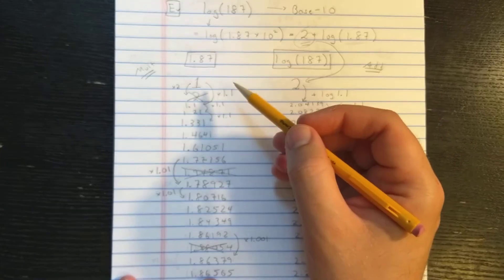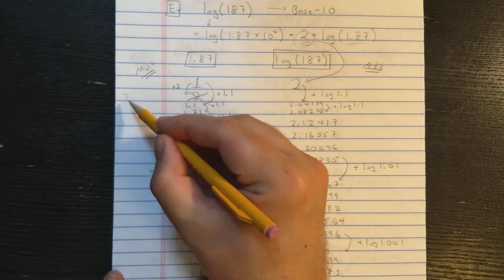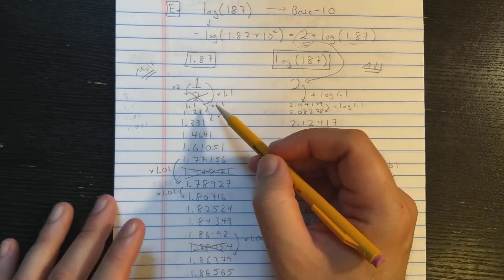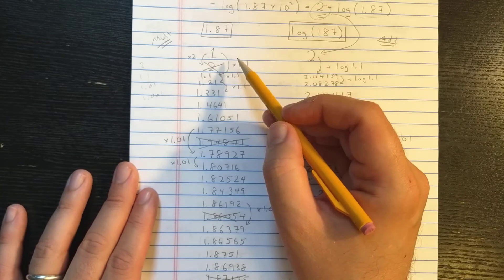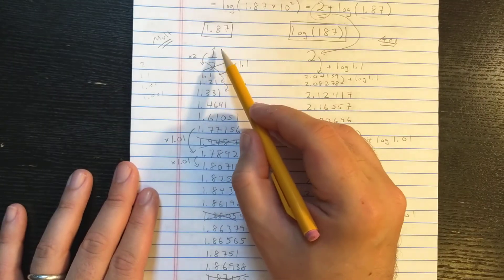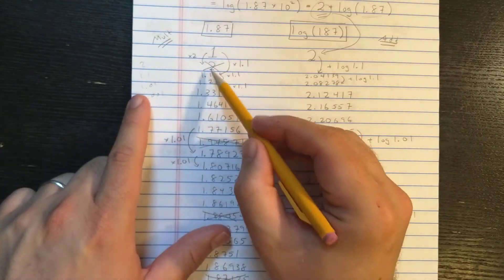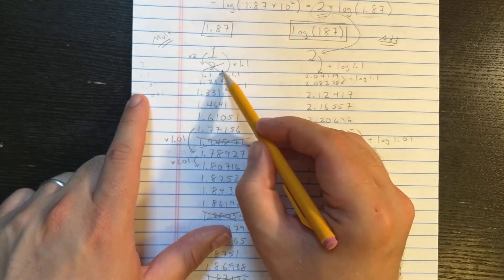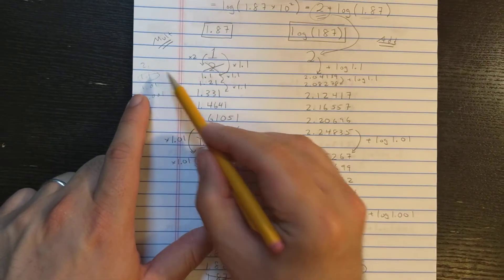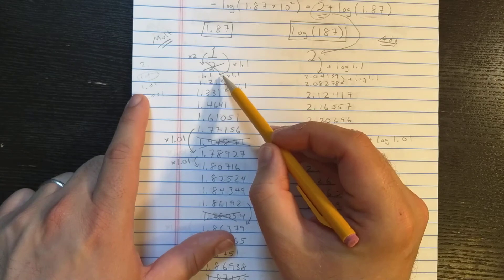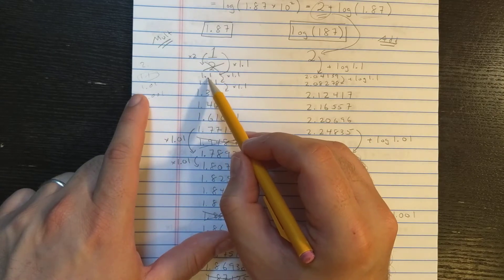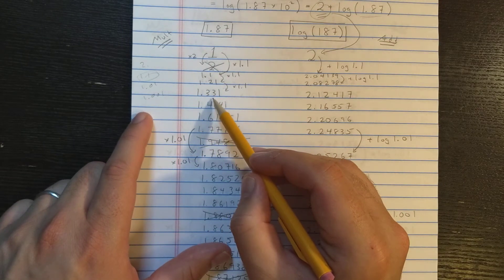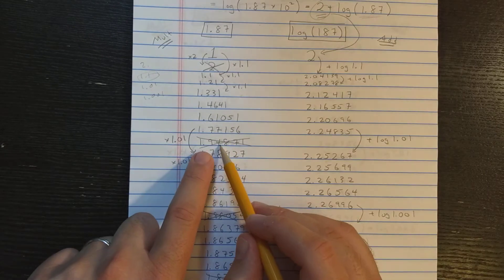So what I do here is I multiply by those numbers you saw in the other video, the 2, the 1.1, the 1.01, 1.001 in this column. So let's see how it works. So I start with a 1. When I multiply by 2, the first number, I see that the number has gone over 1.87. So I don't want that. So I'm going to go back and go to the next multiplier. So I go to multiplier 1.1, and here I have 1.1. Then I multiply by 1.1 again, 1.21 by 1.1 again, 1.331. And I do that until I go over again.